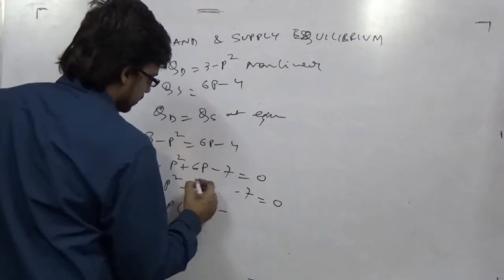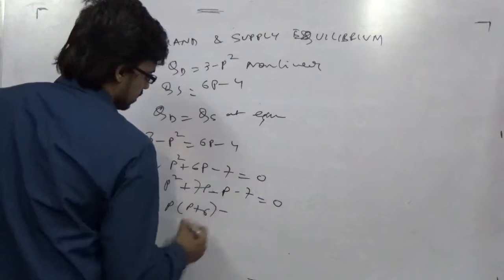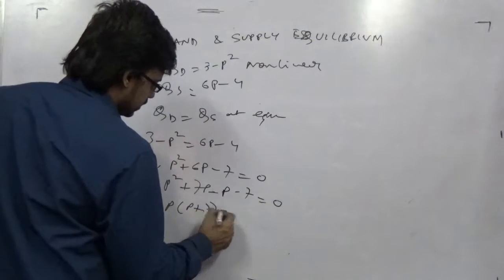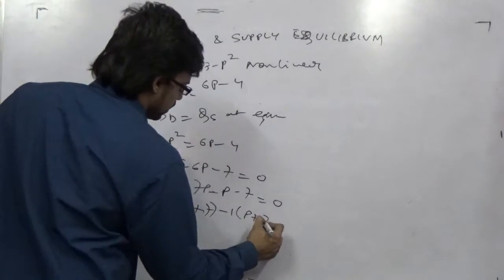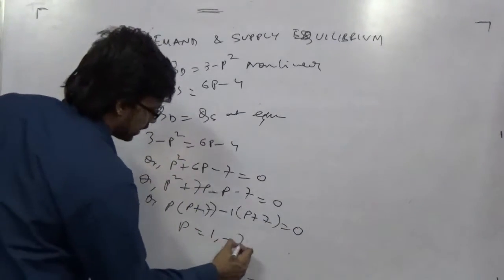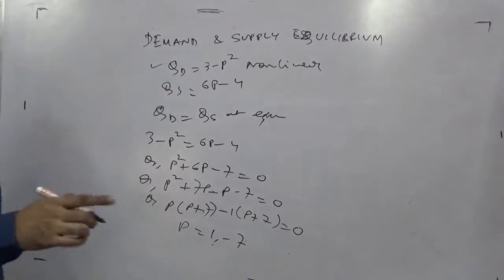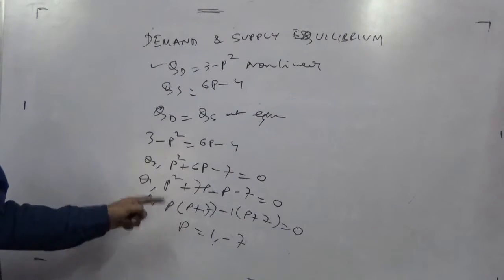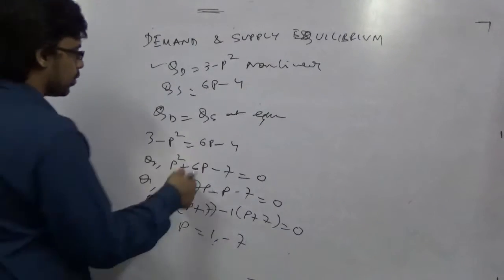This would be 7 minus 7. So p, p plus 7, minus 1, p plus 7. You will get p equals 1 or minus 7. As we know that price is obviously greater than 0 as price is positive, you take p equal to 1 and put it here.